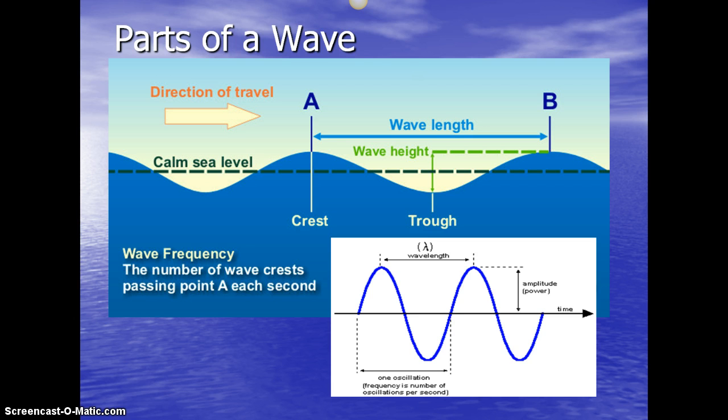Wave frequency is the number of wave crests that pass point A each second. You pick a point out and count how many are passing that point in one second.